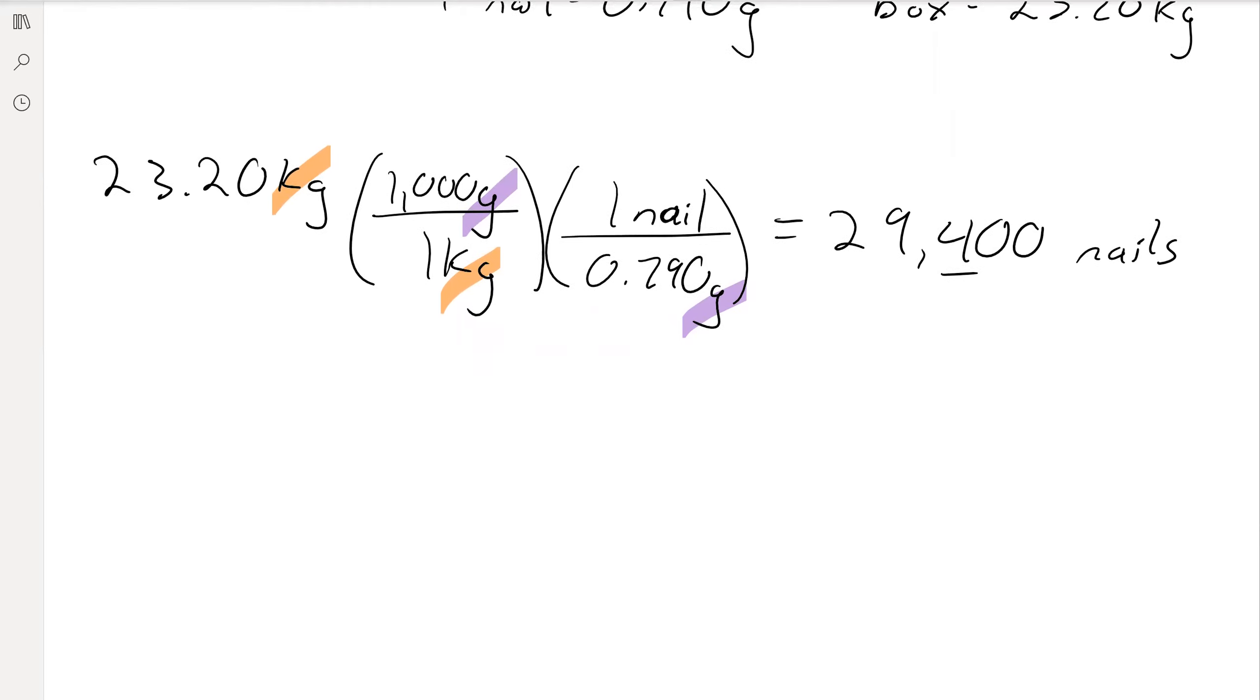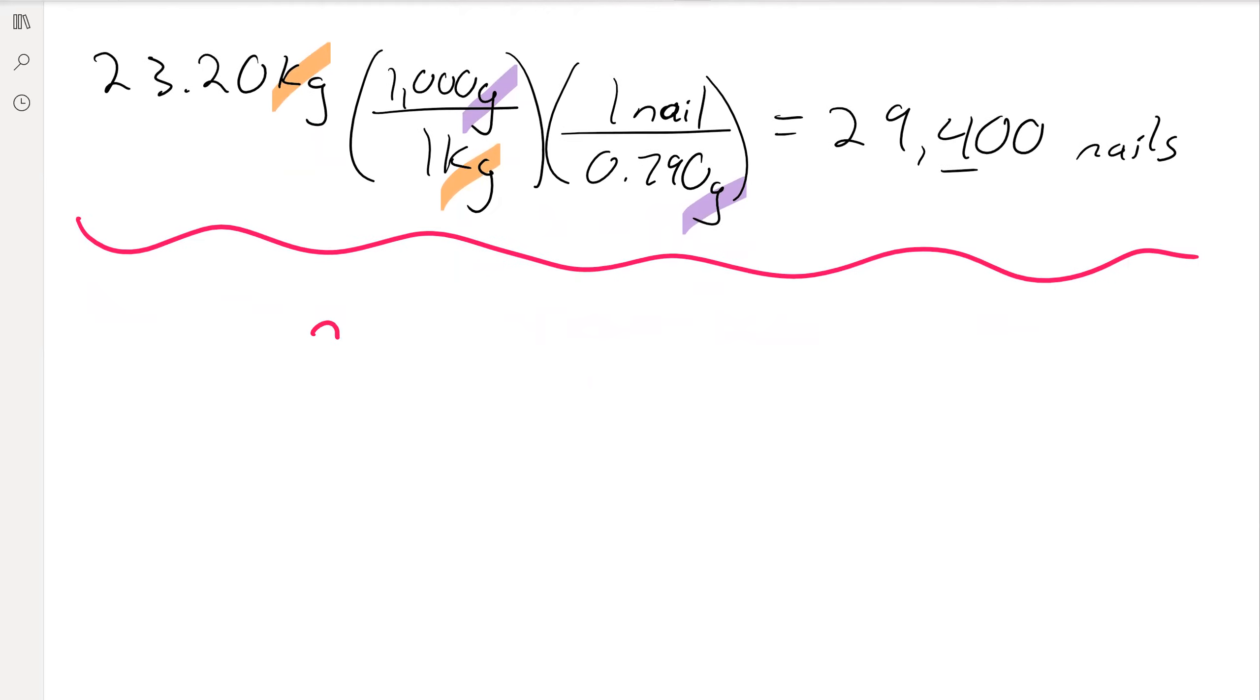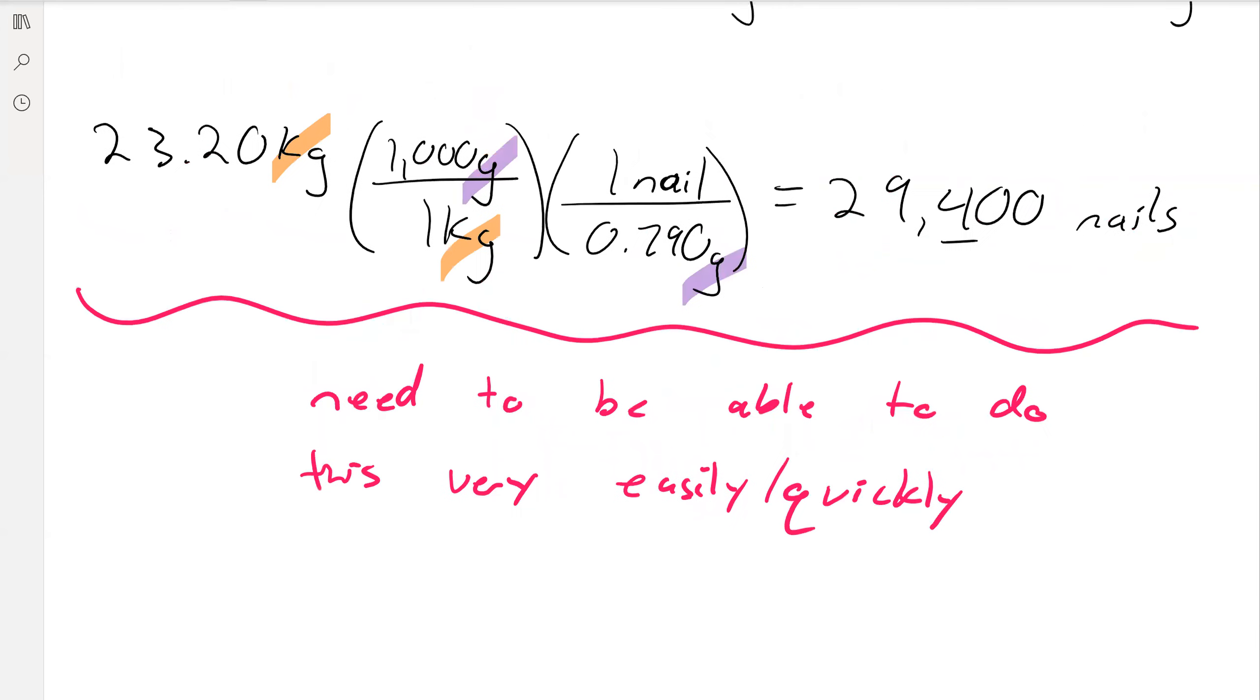So things that you really need to be comfortable with, you really need to be comfortable with these unit conversions. So you need to be able to do this very easily slash quickly. We're going to be doing unit conversions, unit conversions, unit conversions again and again and again and again. If you get good at it now, this class is going to be so much easier. Chem 102 is going to be so much easier. Chemistry overall is just going to be so much more easier and a much more enjoyable experience if you can master doing unit conversions right now.